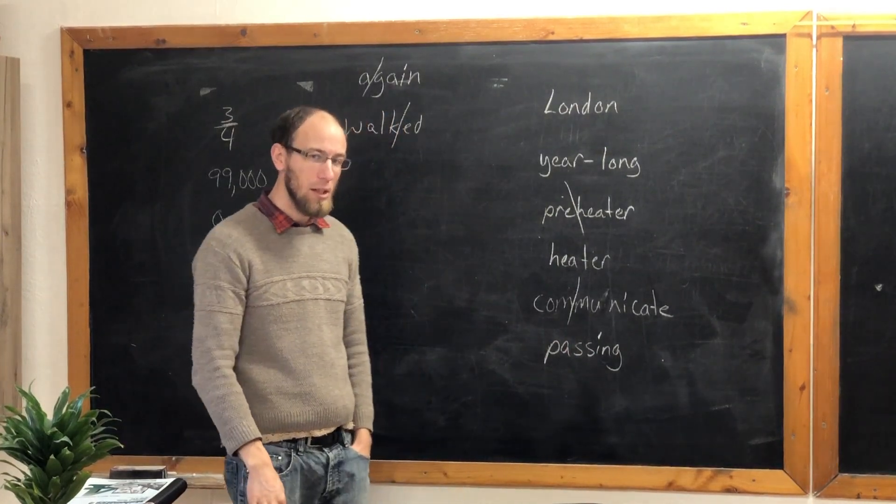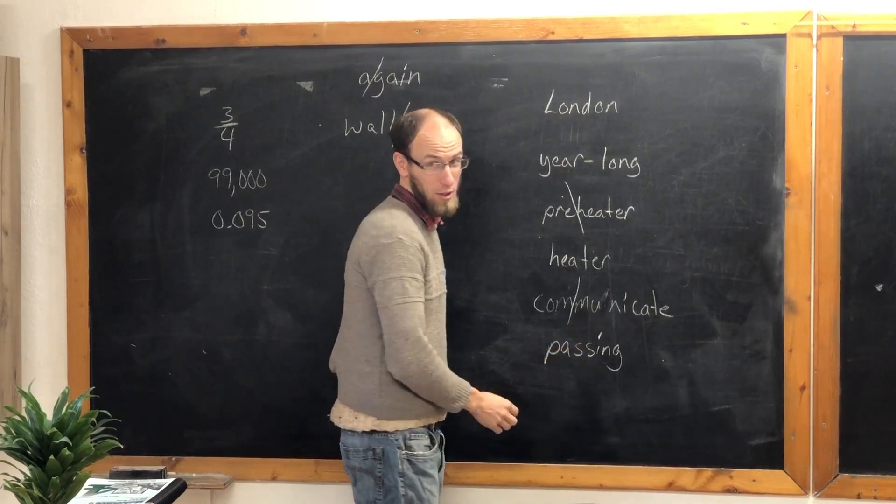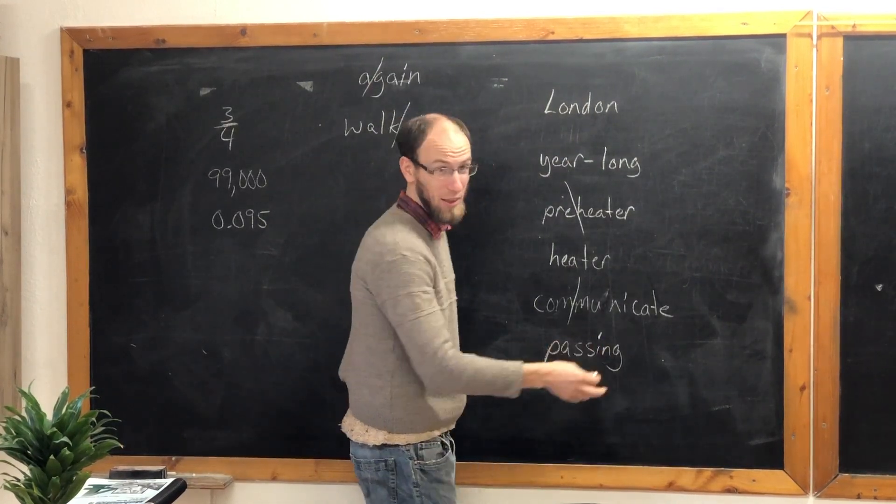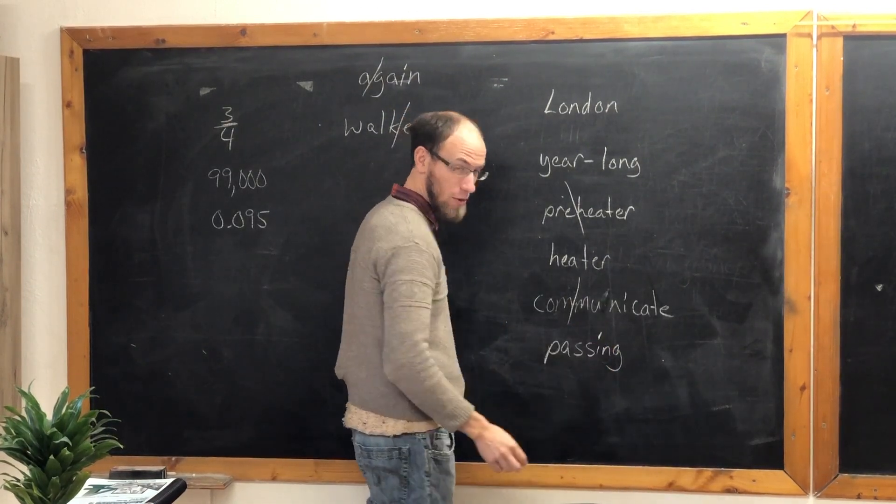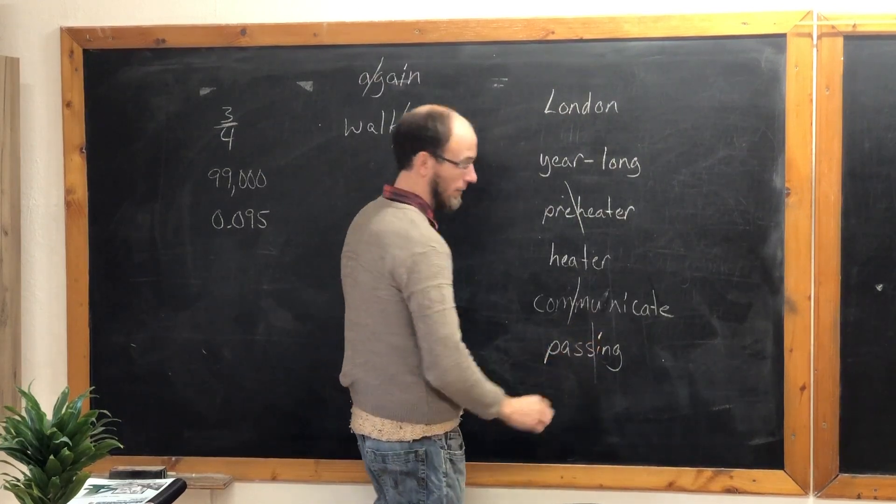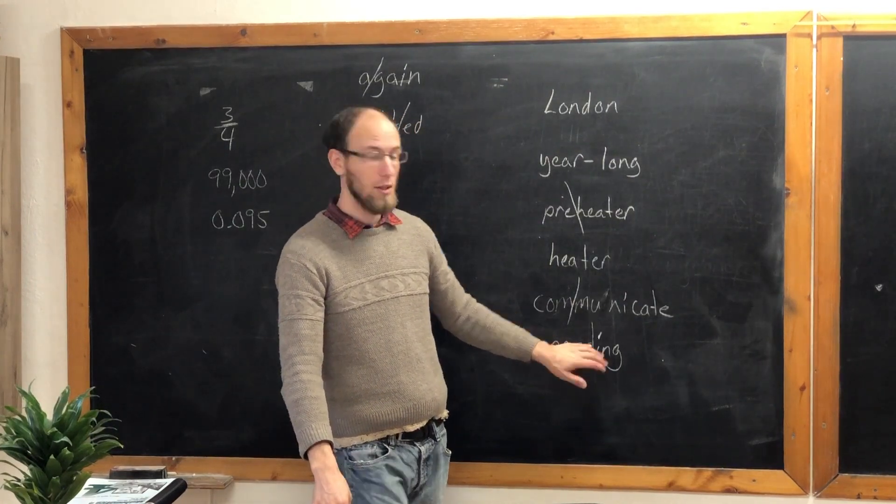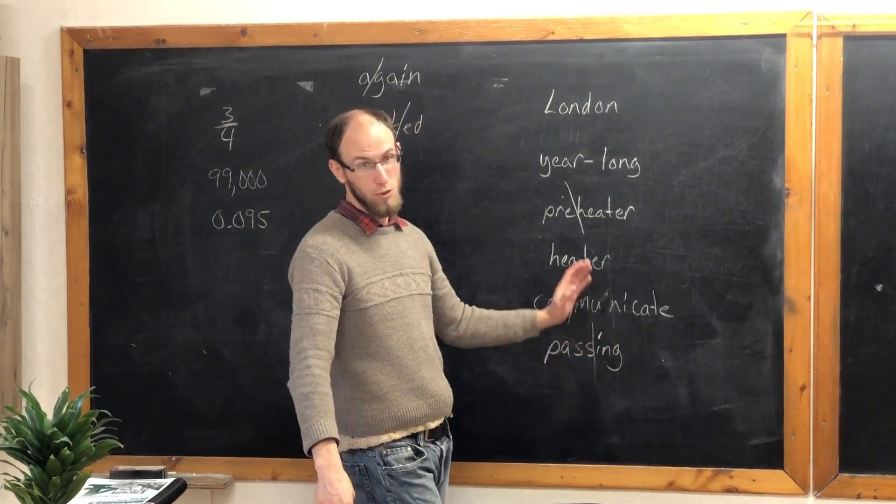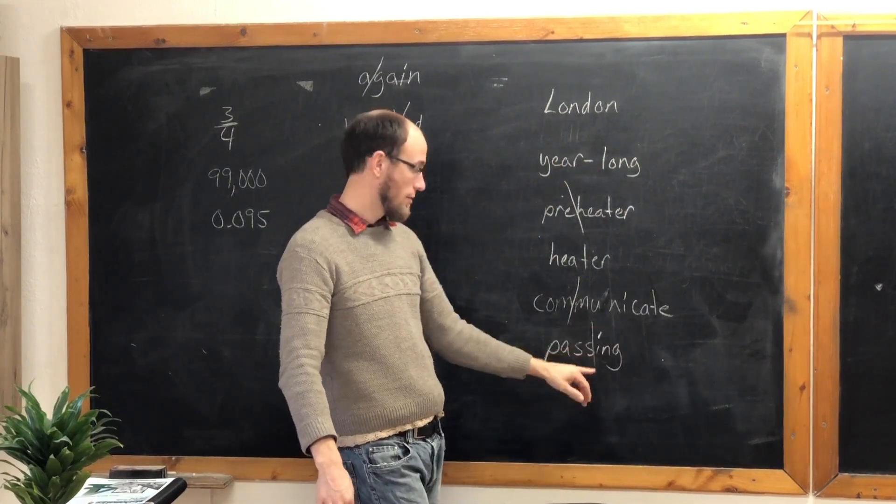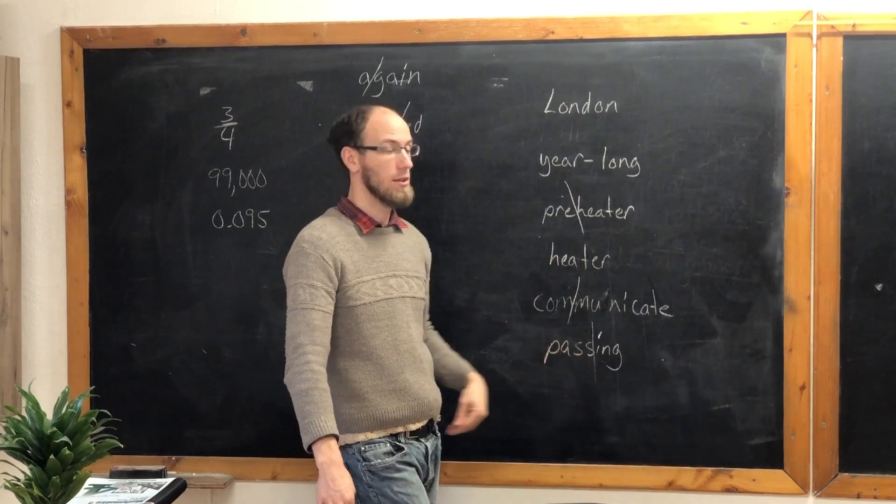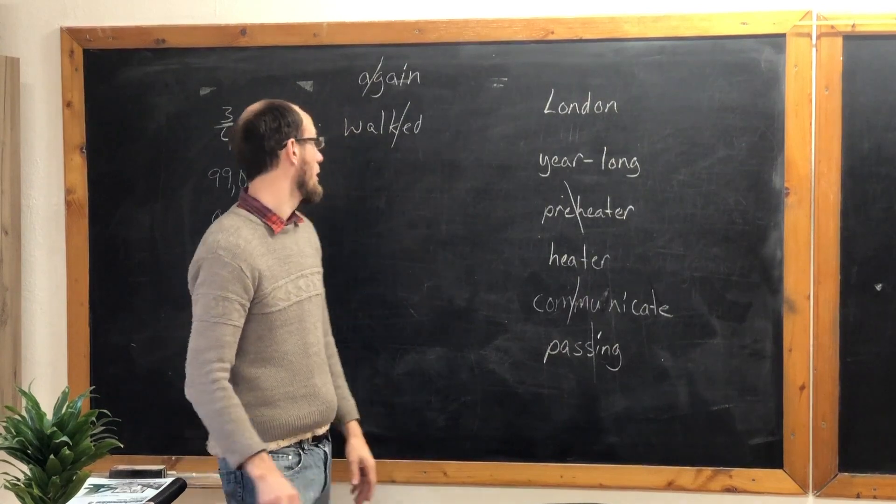And what about passing? No. Can we? No, because if we divide here, well, for one thing, it's really weird. Passing. But the ing takes precedence. So we do divide. But we divide here. Pass-in. Instead of between the double consonants. The prefix or suffix rule takes precedence. It's a stronger rule. It's the king rule. It takes charge over the between double letters.